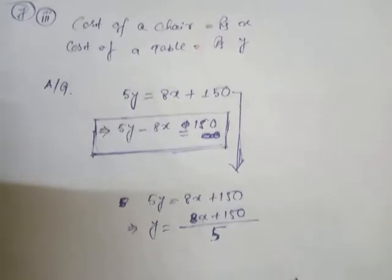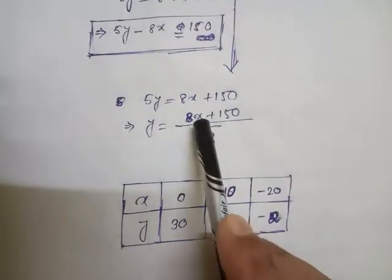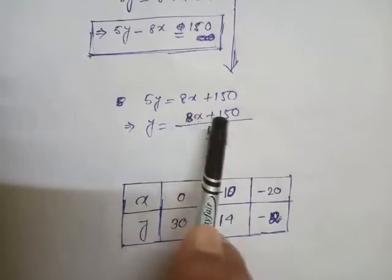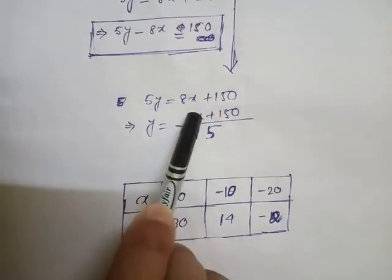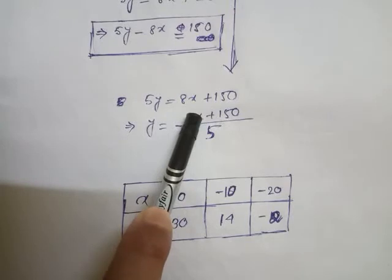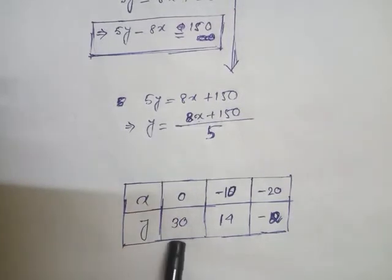How to find the coordinates? First of all, I have given 0. If x is 0, then 0 plus 150 is 150. Now, 150 by 5 is 30. That's why y is 30.